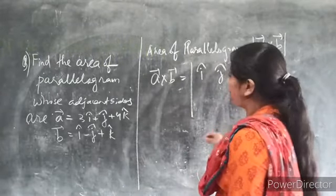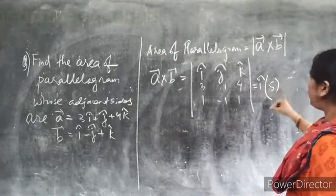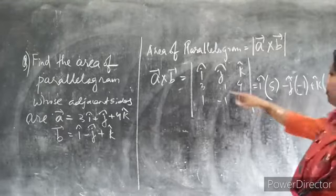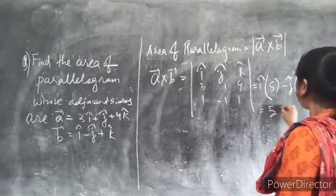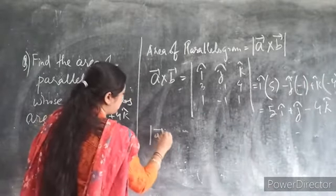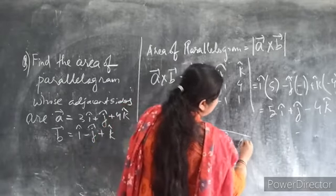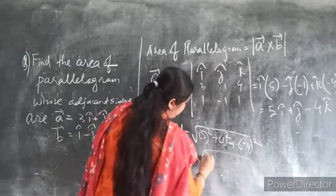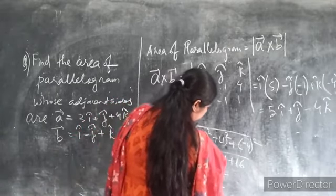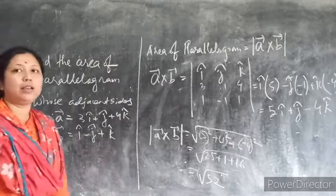First let us find A cross B. Setting up the determinant with I, J, K: coefficients 3, 1, 4 and 1, minus 1, 1. The i component gives 1 plus 4 = 5. Minus j cap gives 3 minus 4 = minus 1. Plus k cap gives minus 3 minus 1 = minus 4. So A cross B equals 5i cap plus j cap minus 4k cap. The magnitude is root over 25 plus 1 plus 16 = root 52. This is the area of the parallelogram using cross product. Thank you.